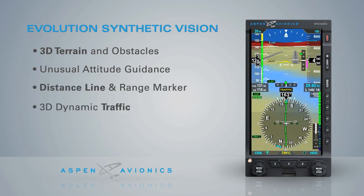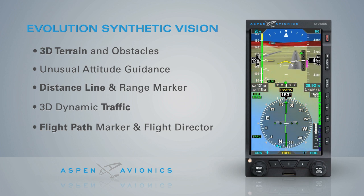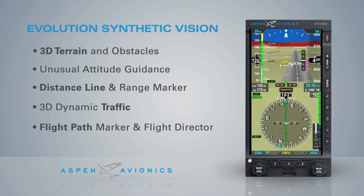Additional features include a 3D dynamic traffic display, flight path marker, and flight director symbology. These display elements are all designed to interact dynamically and intuitively to give the pilot the most accurate positional and situational awareness.